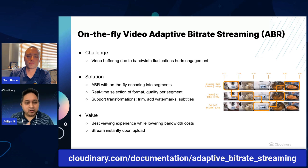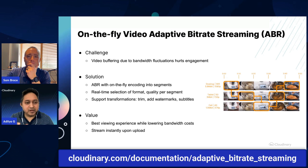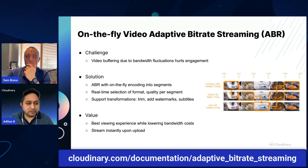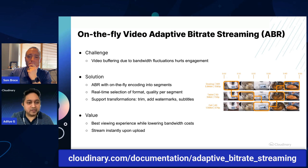So what happens with on-the-fly adaptive bitrate streaming is all of that encoding — the whole process of segmenting the video into chunks of 2 to 10 seconds and then creating various streaming profiles, which is generally a combination of the video format, the resolution, and the bitrate — all of that process, instead of happening in advance at the time of upload, is now happening on the fly when the video is first requested by an end user.